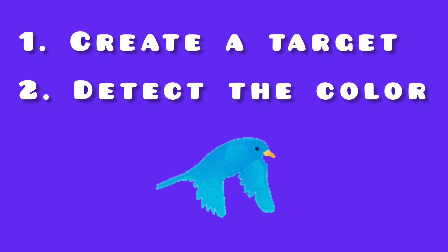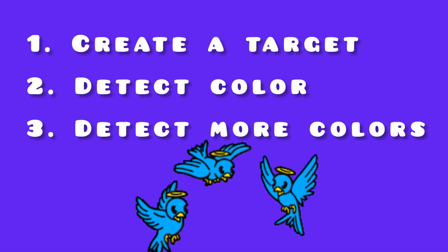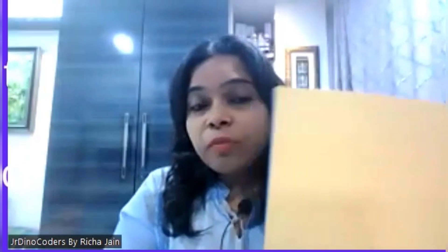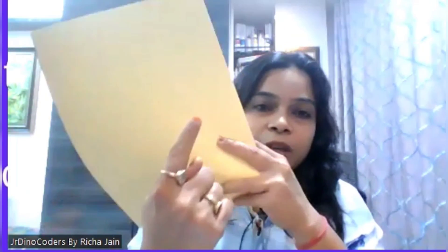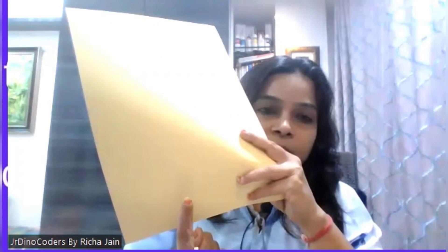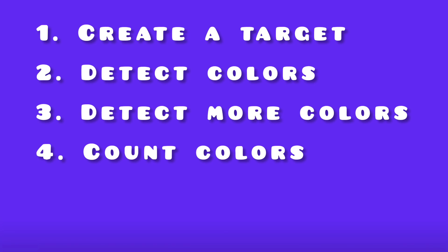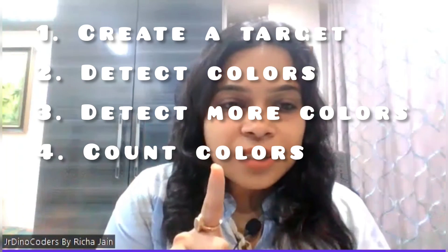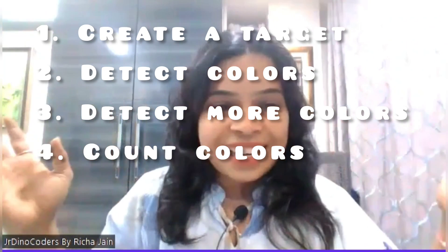You will have to write the code to detect the colors. Then detect more colors to make it perfect, because the color may vary from lighting to lighting. So this yellow sometimes could be one shade, sometimes another shade. Detect more colors — make it more intelligent to detect more and more colors. And then finally count colors. So without wasting any time, let's get started.